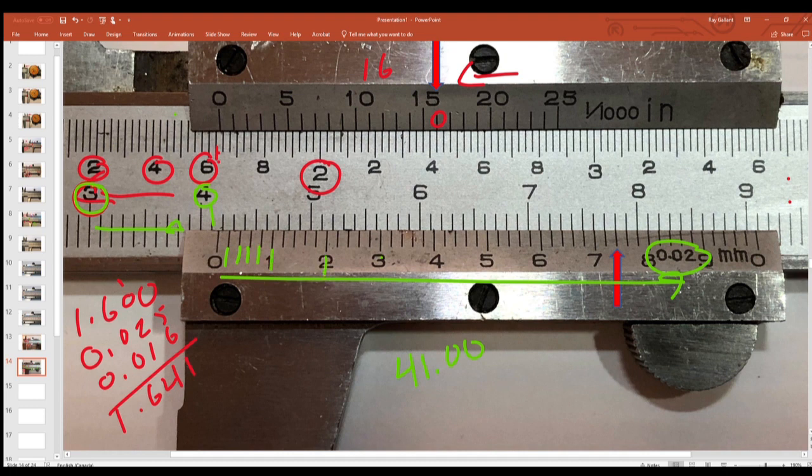So that would be 0.2, 0.3, 0.4, 0.5, 0.6, 0.7, 0.72, 0.74.